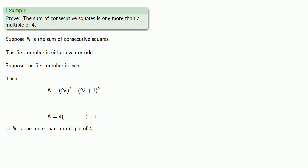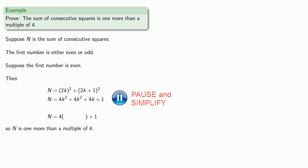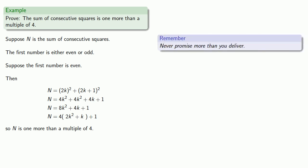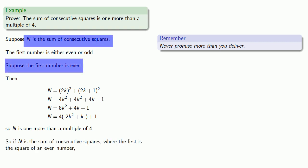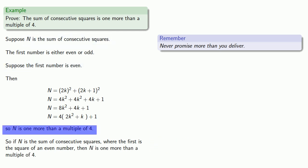Now let's see if we can build our bridge. Doing a little algebra, we can write n as 4 times something plus 1. So our conditional is: if n is the sum of consecutive squares where the first is the square of an even number, then n is one more than a multiple of four.